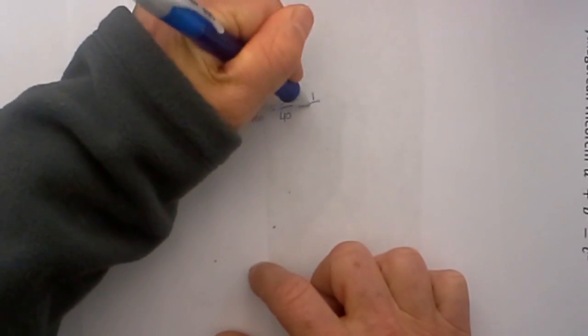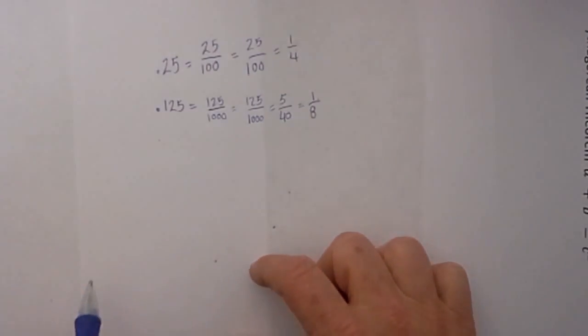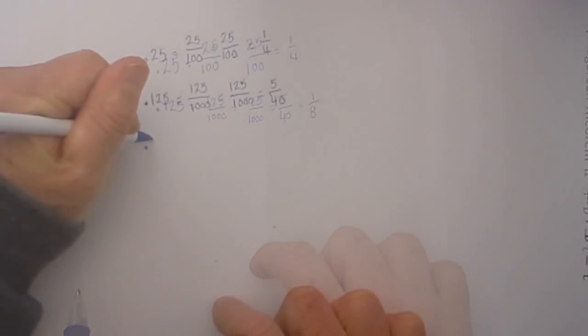So it becomes 1/8. .75 - I write 75 over, I look at the last unit tenths, hundredths.